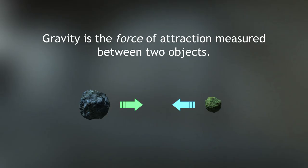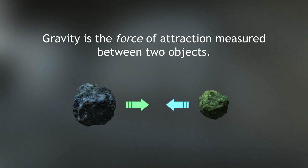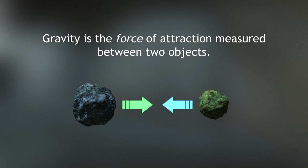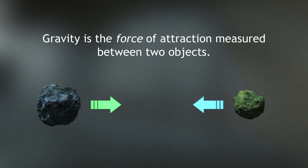Gravity is defined as the force of attraction measured between two objects. The greater the masses, the greater the gravitational force pulling those masses together. The greater the distance between two objects, the less the force of attraction. All objects with mass have this force of attraction between them. We will discuss the relationship this force of attraction has with distance a little later, but for now let's dig a little deeper on gravity and how it enables orbits.